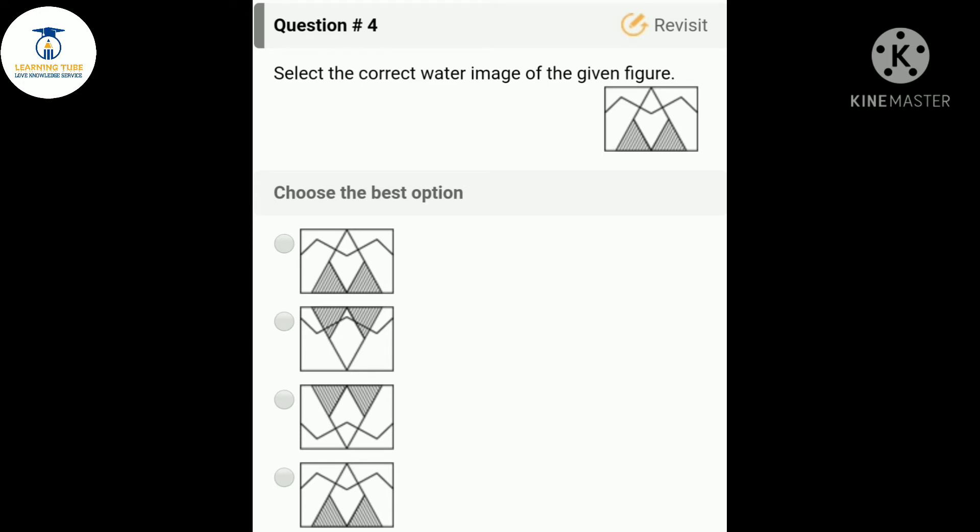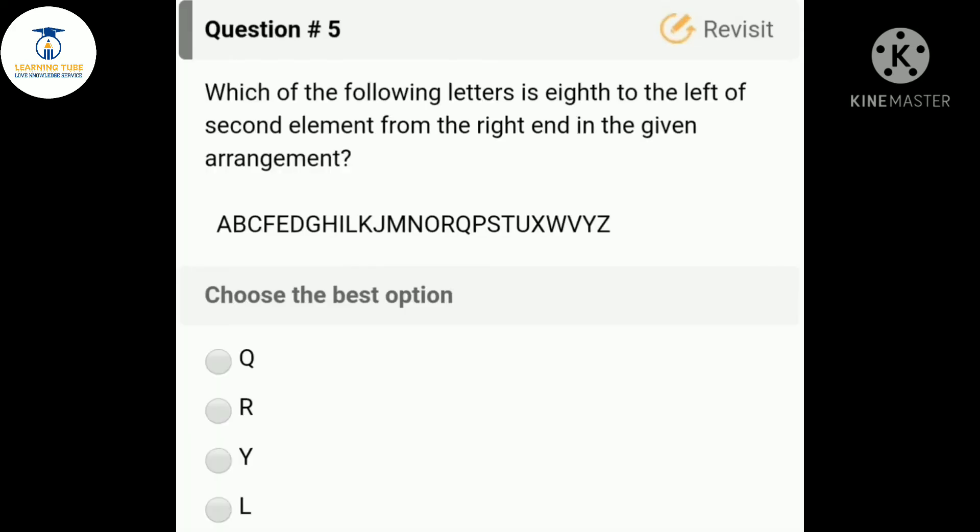Let's move towards the fourth question: select the correct water image of the given figure. At first, let you know what is water image. Water image is the reflection of a figure in water. So the water image of the given figure will be option C.